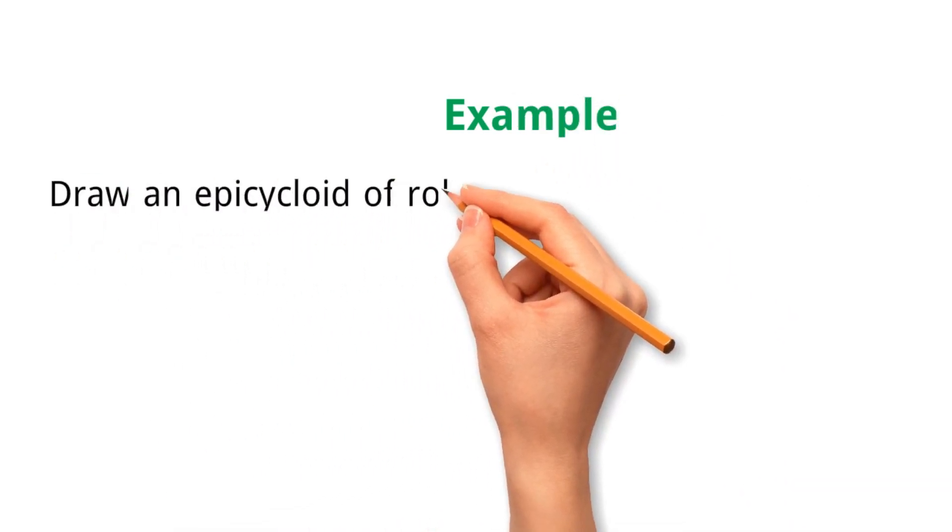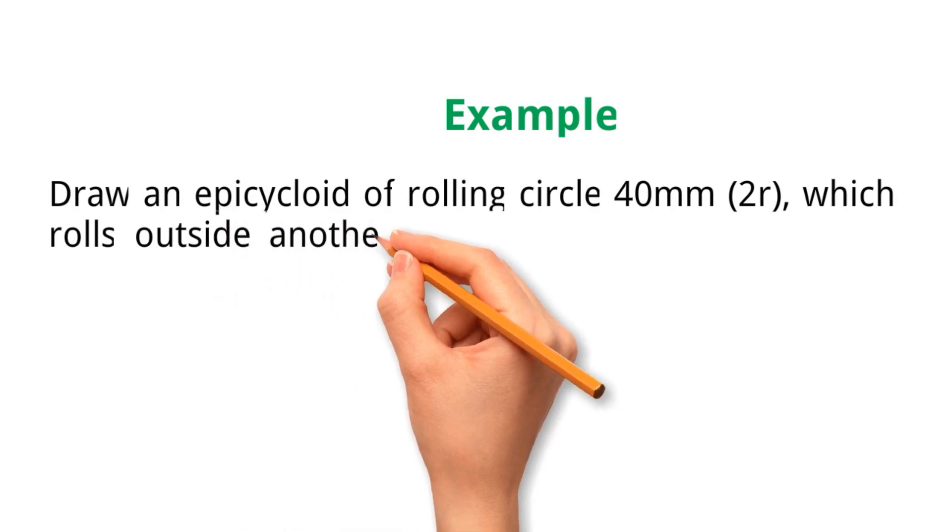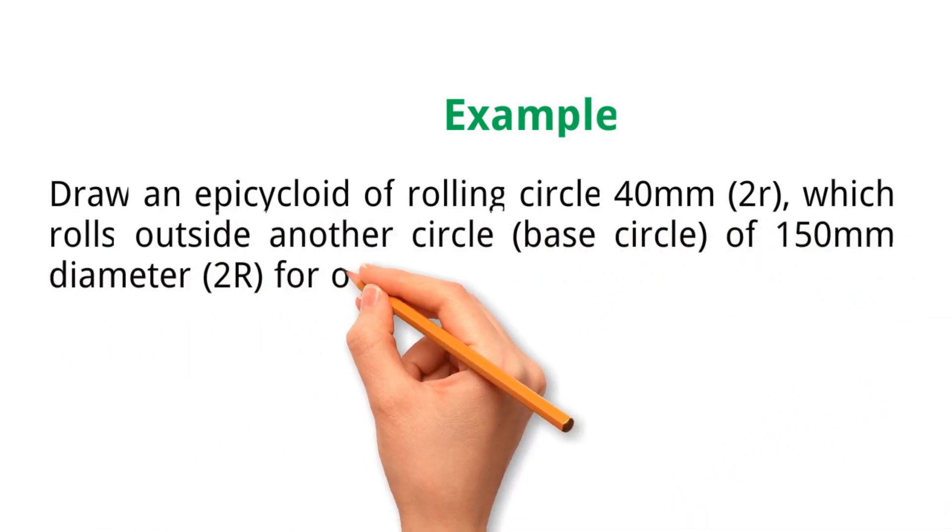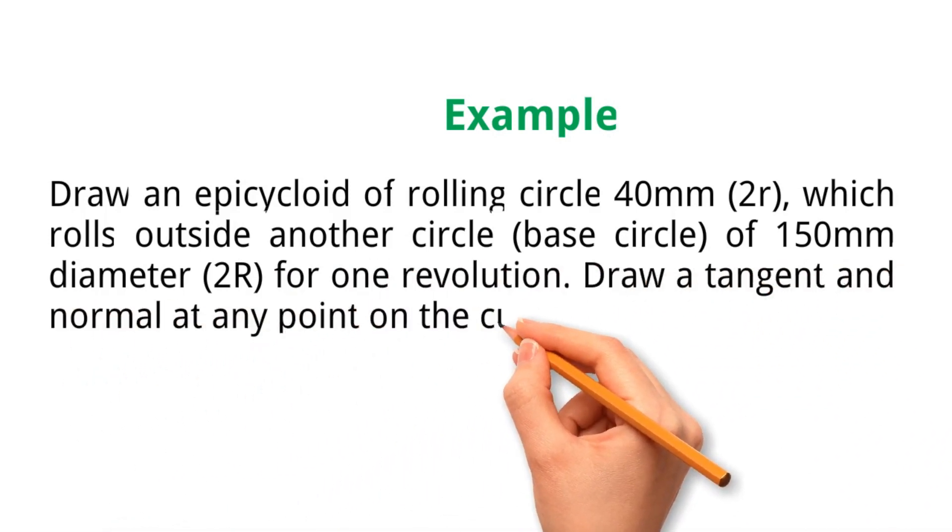Example. Draw an epicycloid of rolling circle 40 mm which rolls outside another circle of 150 mm diameter for one revolution. Draw a tangent and normal at any point on the curve.